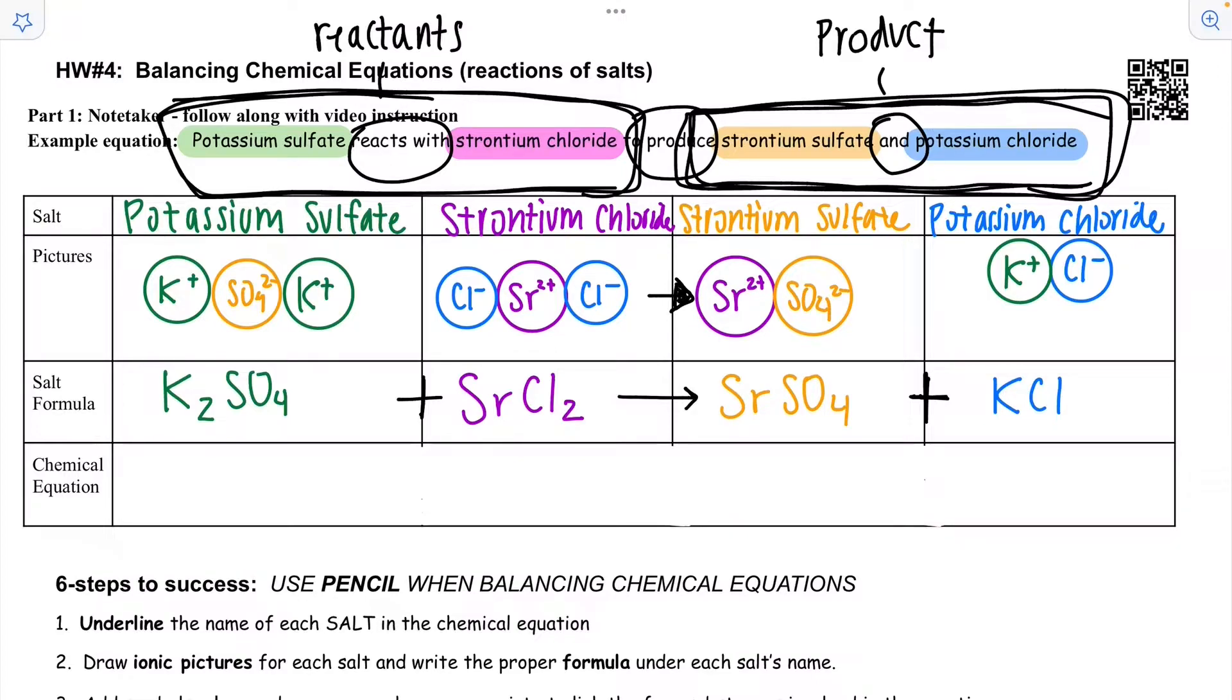Thus, we must balance using coefficients. Coefficients are large numbers that go directly in front of the salts in the chemical equation. Unlike subscripts that only apply to the atom that is right before it, coefficients apply to the entire salt. To balance this chemical equation, we need more potassium chloride on the product side to match the amount of potassium chloride that we are putting into the reaction. The proper way to do this is to add a coefficient. Writing K2Cl2 is not the same as the salt formula. You must write salt formulas first before you do any balancing. And salt formulas should purely come from the name, not from what you had on the reactant side.